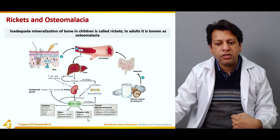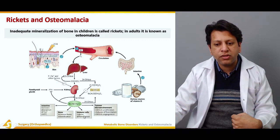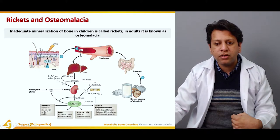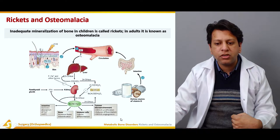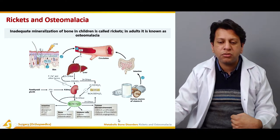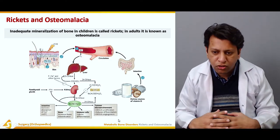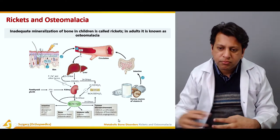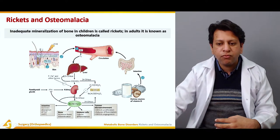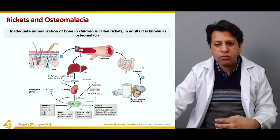Active vitamin D also causes immune cells to differentiate and has a role in the tumor microenvironment, where it inhibits proliferation, differentiation, and angiogenesis, especially in the case of tumors.